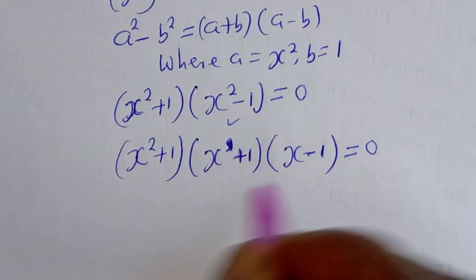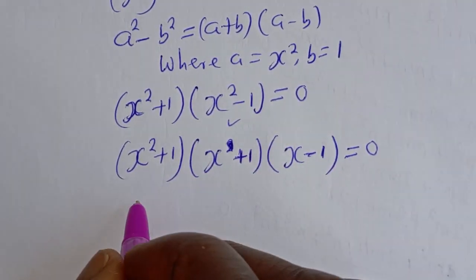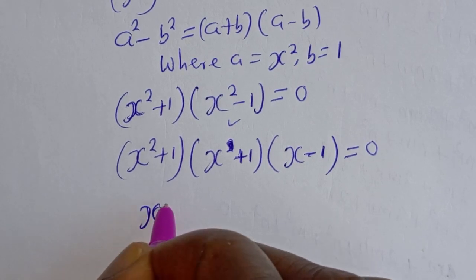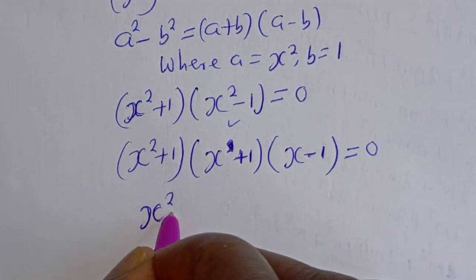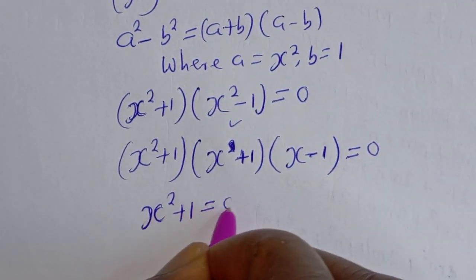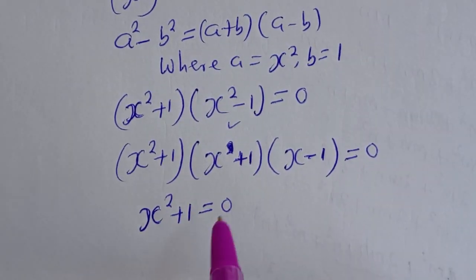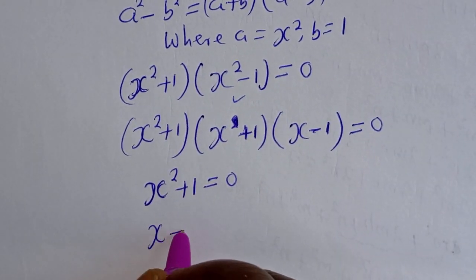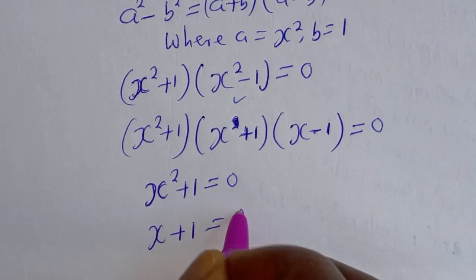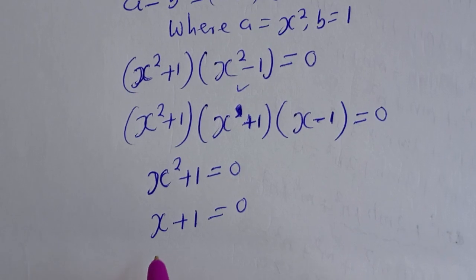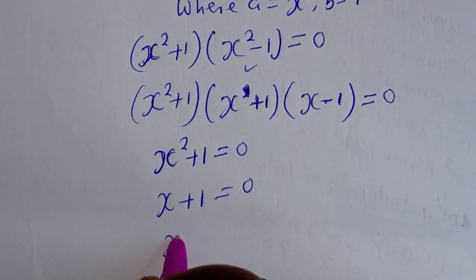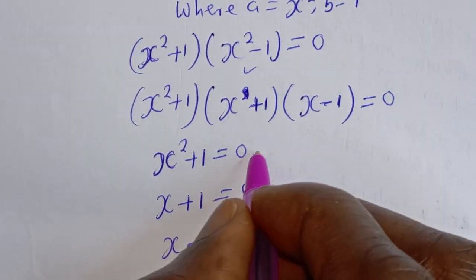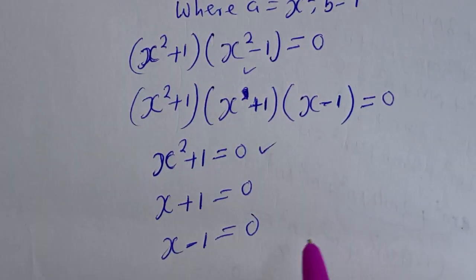Now, there are three cases here. The first case is S squared plus 1 is equal to 0. The second case is S plus 1 is equal to 0. And the third case is S minus 1 is equal to 0.